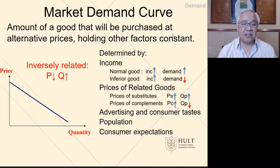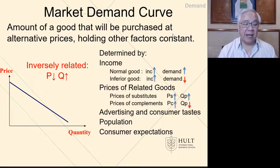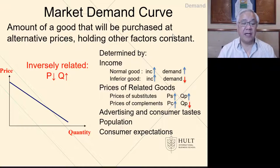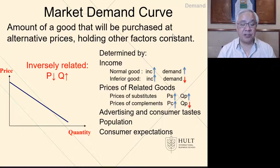The market demand curve looks like this — it's downward sloping, and we'll see that as the price rises, the demand will drop. We'll look at what determines the shape and position of the demand curve. They include income, prices of other related goods, advertising and consumer tastes, population, and consumer expectations.